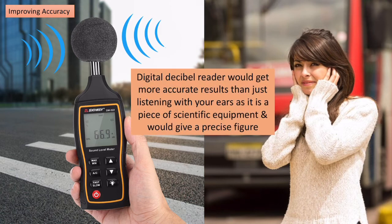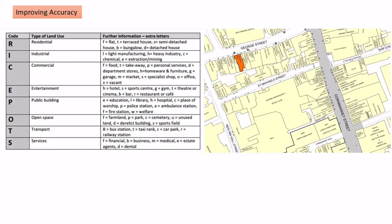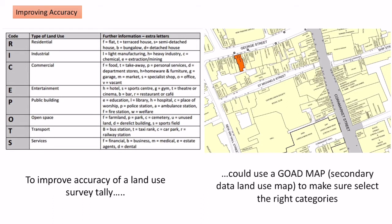A decibel reader is a scientific piece of equipment and gives me a precise figure I can use — such as 66.9 — and I can compare that figure with another area, getting quantitative data rather than a subjective feeling from my ears. If I was improving accuracy in a land use survey, I'd take a Goad map — a secondary data land use map — which tells me exactly what each building is, whether it's a shop or a bank. I can double-check I'm correctly identifying buildings, which improves the accuracy of my primary data collection.